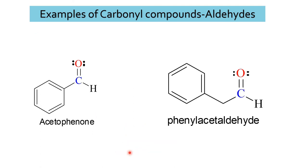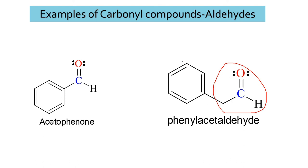These are examples of aromatic aldehydes. This is called acetophenone, and this is called phenylacetaldehyde. If we consider this example, CH3CHO is called acetaldehyde — so when one of the hydrogens is replaced by a phenyl group, it is called phenylacetaldehyde.